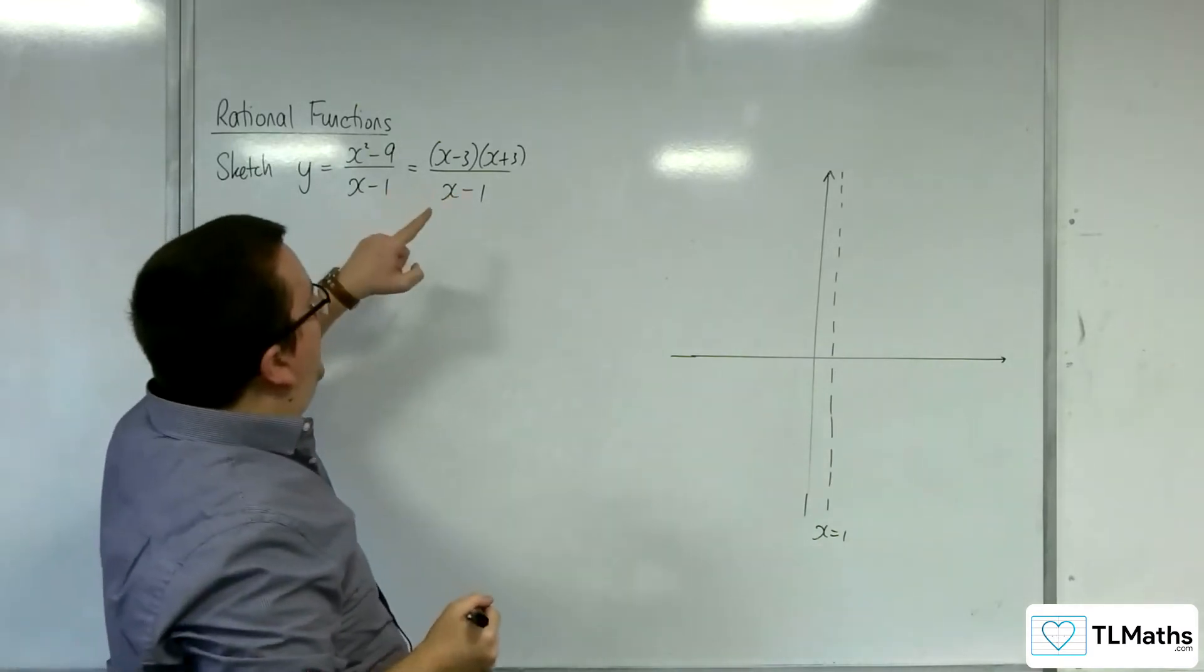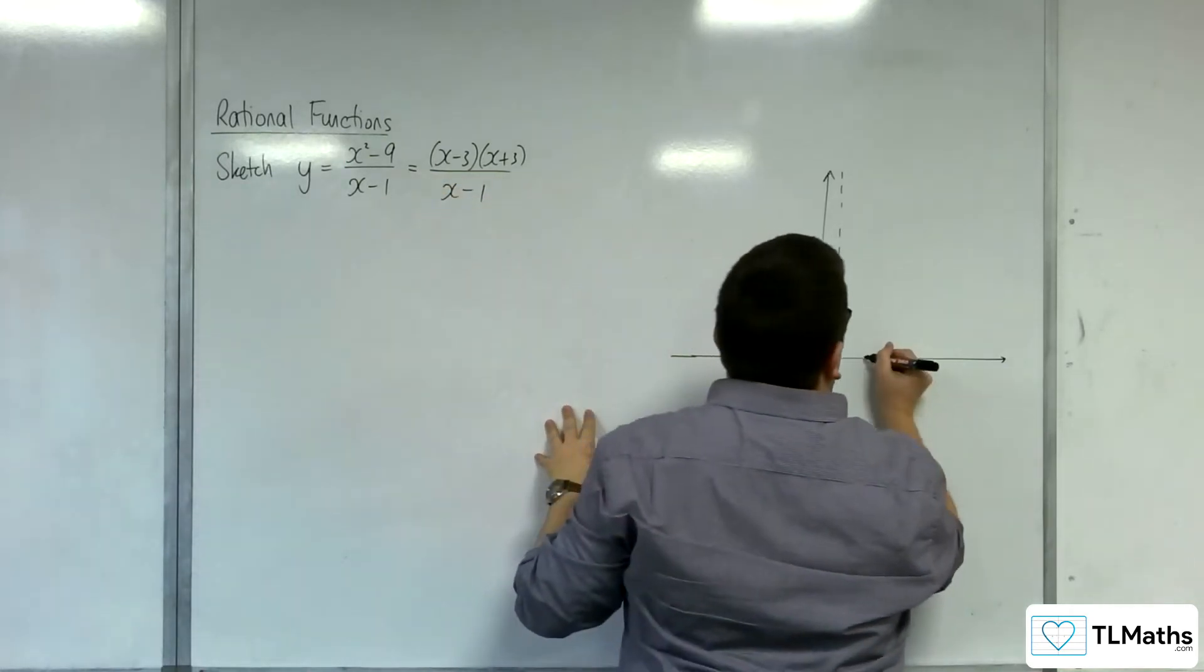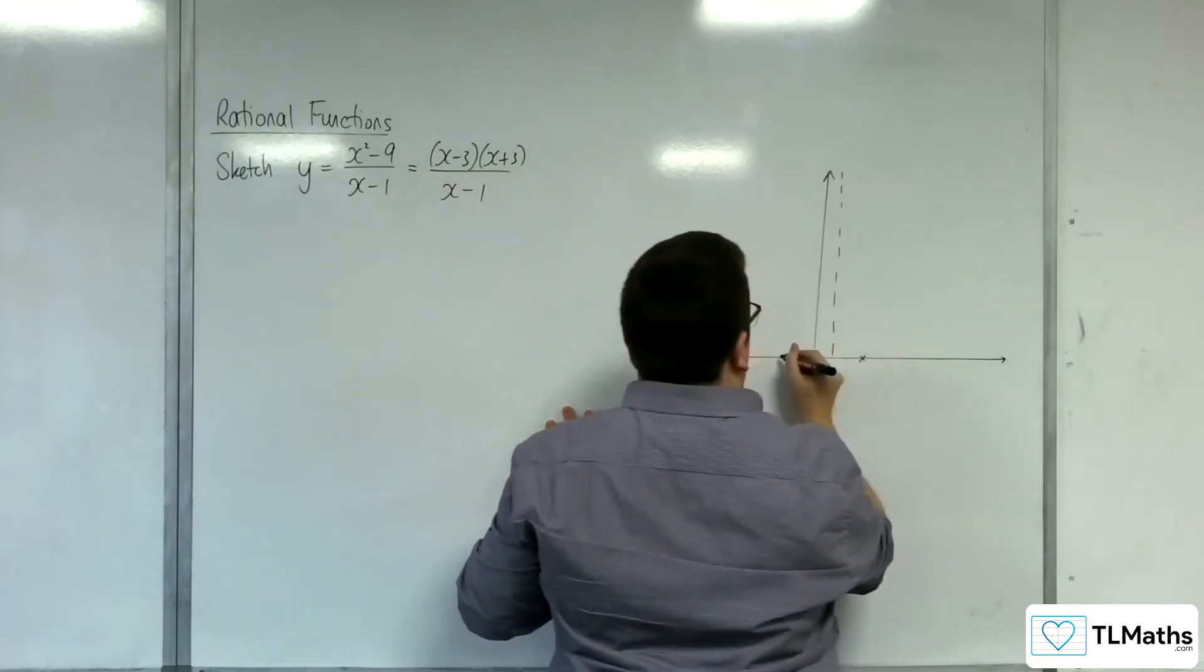Then we've got where it crosses the x-axis. That's when the numerator is 0, so that's at 3 and minus 3. So 3 and minus 3.